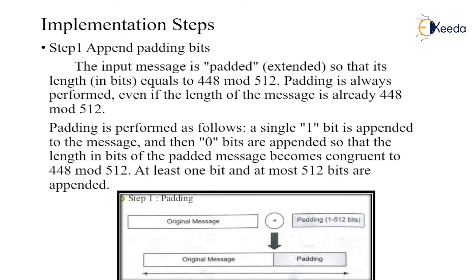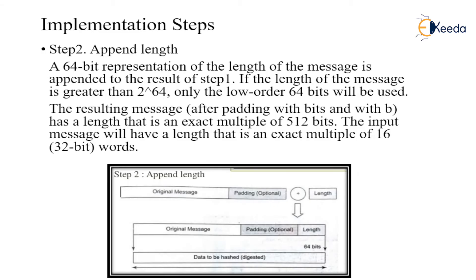At least one bit and at most 512 bits are appended. The figure shows how padding takes place: the original message is padded with bits ranging from a single bit to 512 bits to make it congruent to 448 mod 512. The output is the original message plus the padded bits. Step 2 is to append the length: a 64-bit representation of the length of the message is appended to the result from step 1. If the message length is greater than 2 to the power of 64, only the lower-order 64 bits are used.